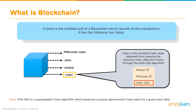SHA-256 is a cryptographic hash algorithm that produces a unique 256-bit alphanumeric hash value for any given input. Whatever input you provide, it will always produce a 256-bit hash — that is the unique feature of this cryptographic algorithm.